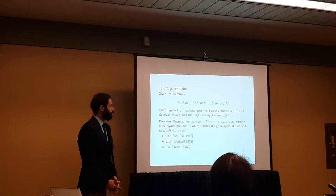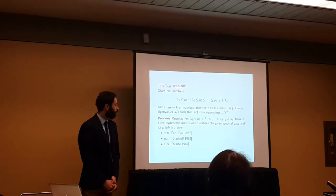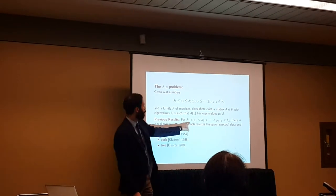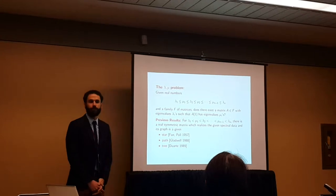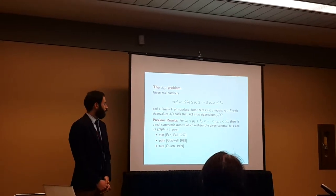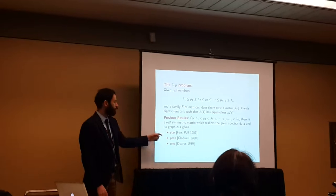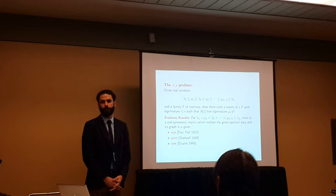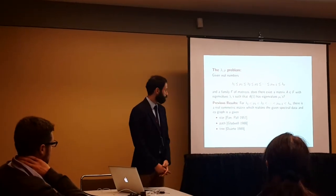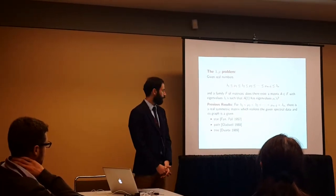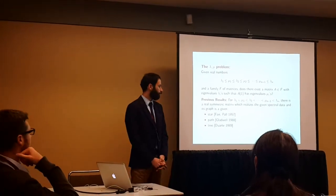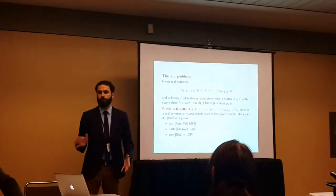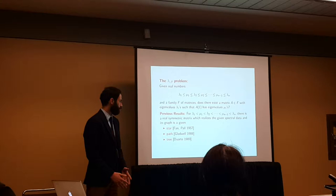This relation is actually Cauchy's interlacing inequalities. They should have that relation, otherwise it's not going to happen. The previous results on this are kind of an old problem. Fan and Pall in 1957 showed that if the graph of the matrix is a star and we have strict inequalities here, we call it strict interlacing inequalities. If the graph of the matrix is a star, we can show there is always a solution, and up to some permutations, the solution is unique. Same thing is true for paths. Gladwell showed that in 1988, and one year later, Duarte in 1989 showed that's true also for trees.